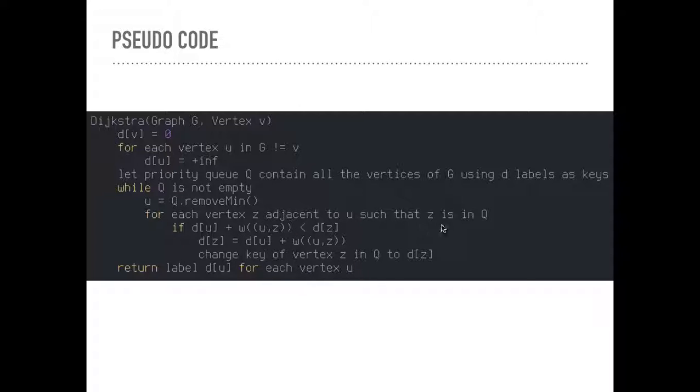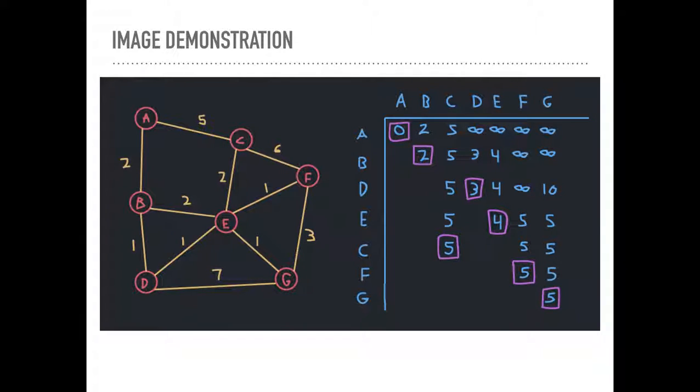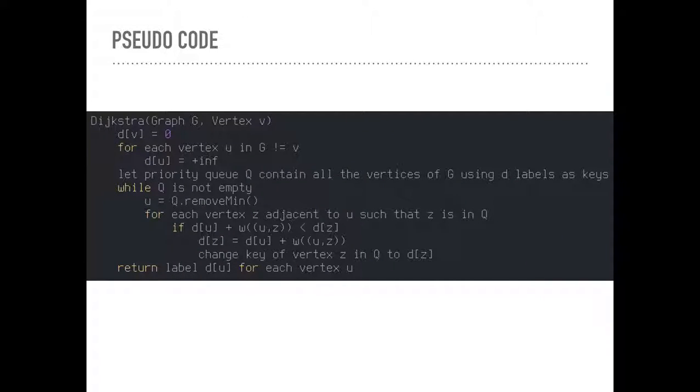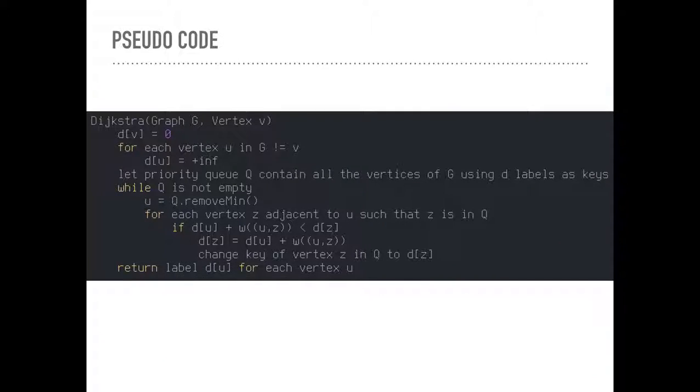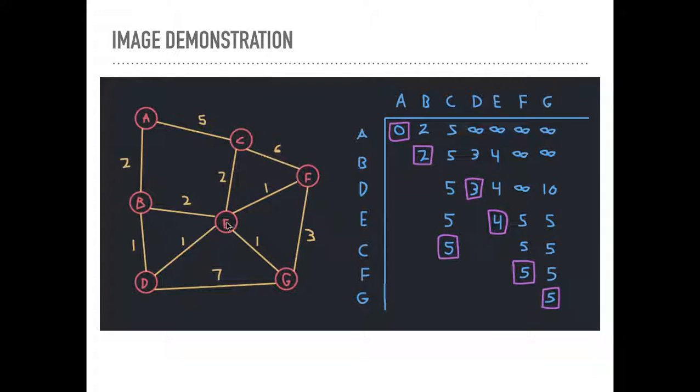Anyways, for each vertex Z adjacent to U, such as Z is in Q. So that's why we're looking at adjacent, right, from A to C to B. Then we said, well, these aren't adjacent. They're not directly connected, so don't worry about those. We're looking at only adjacent ones. And then if the distance to the vertex already, whatever our current shortest path was, so say we got to E in 4, and then plus the weight from U to Z. So we got here in 4, and now the weight from U, which is E, to Z. Let's say it's G because Z is adjacent. So it's plus 1. So 4 plus 1.